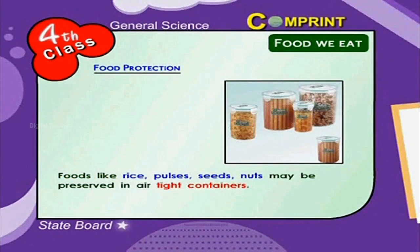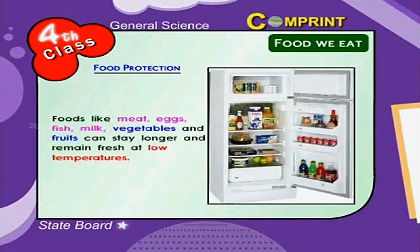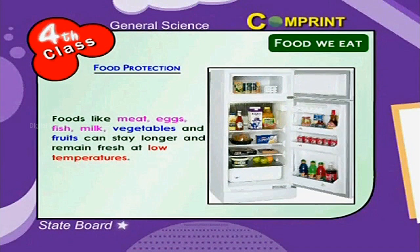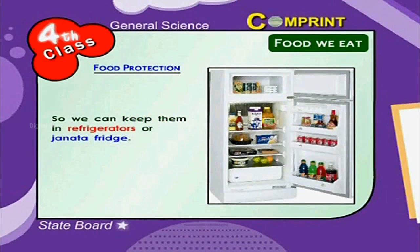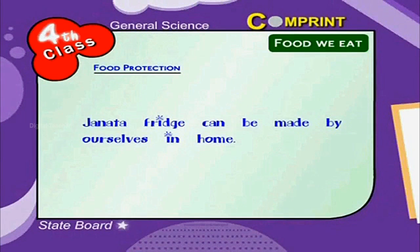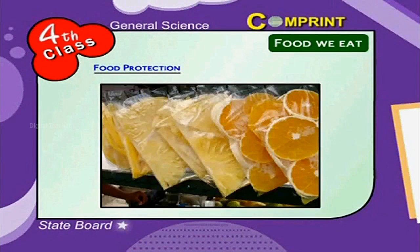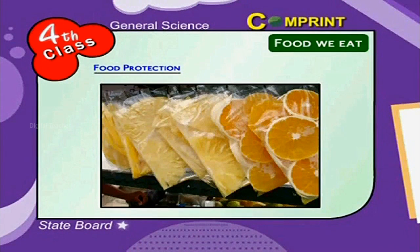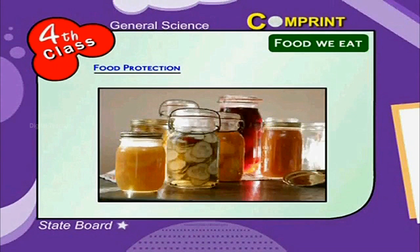Foods like rice, pulses, seeds, and nuts may be preserved in airtight containers. Foods like meat, eggs, fish, milk, vegetables, and fruits can stay longer and remain fresh at low temperatures, so we can keep them in refrigerators. Fruits and vegetables can also be kept fresh for some days by covering them with wet cloth or keeping in polythene covers with holes. Fruits can be preserved in the form of jams and jellies.